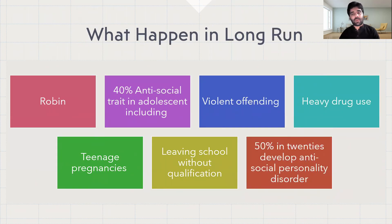In the long run, according to the Robins study, 40% of adolescents who show antisocial behaviors when young go on to have violent offending, heavy drug use, teenage pregnancies, and may leave school without qualifications. Other studies show that 50% of people with Conduct Disorder in their 20s develop antisocial personality disorder.